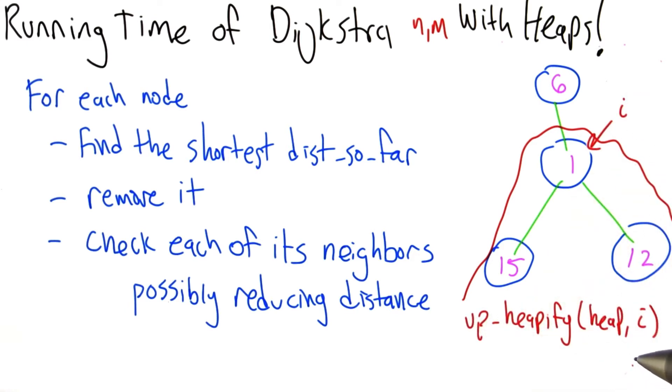So if this is node i, if we run upheapify on this heap with the pointer to i, what it's going to do is bubble this small value up as high as it needs to be in the tree. It's going to take big theta of log n time, and then the heap property will be restored and all will be well.